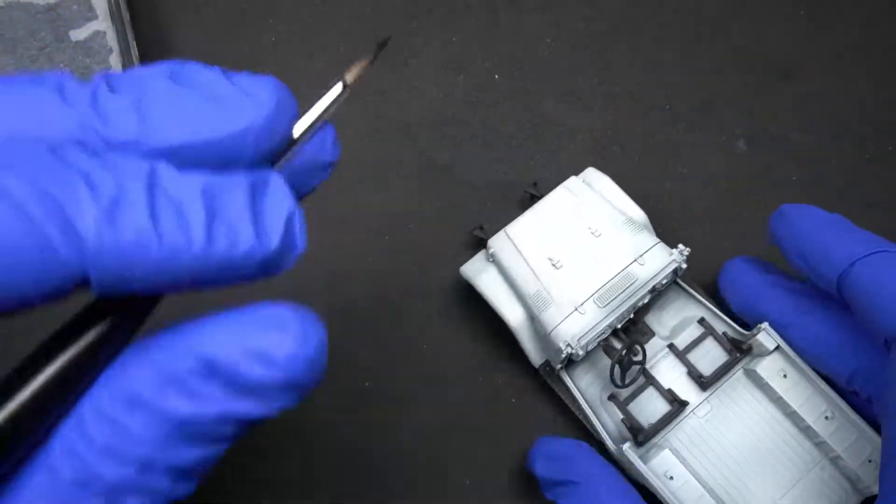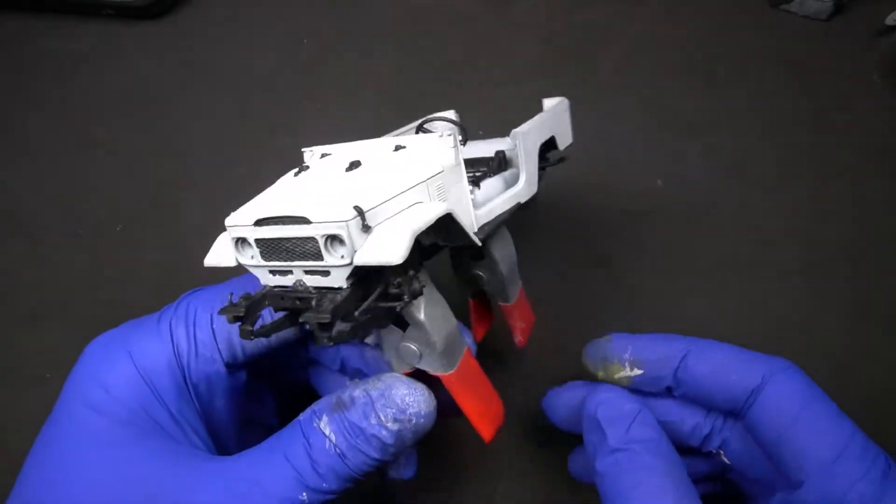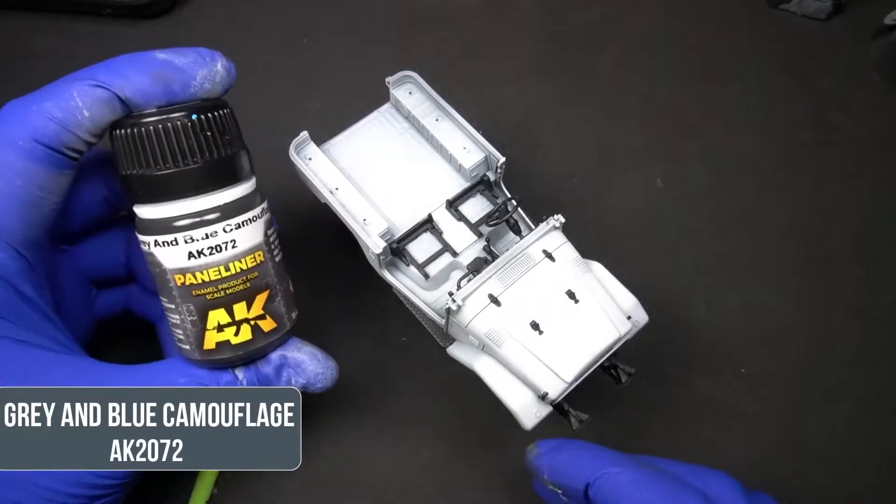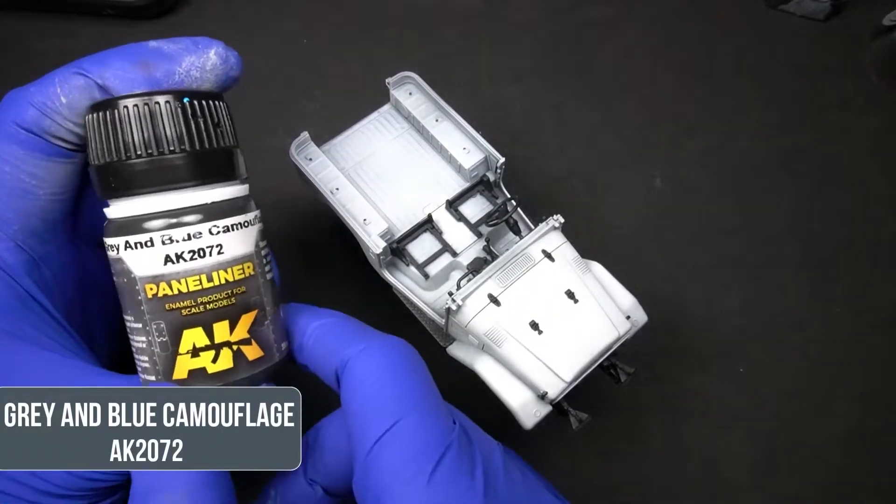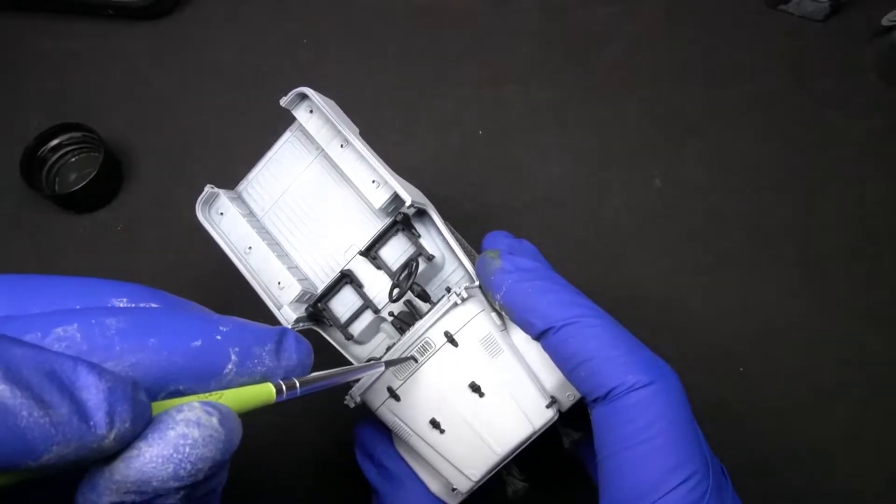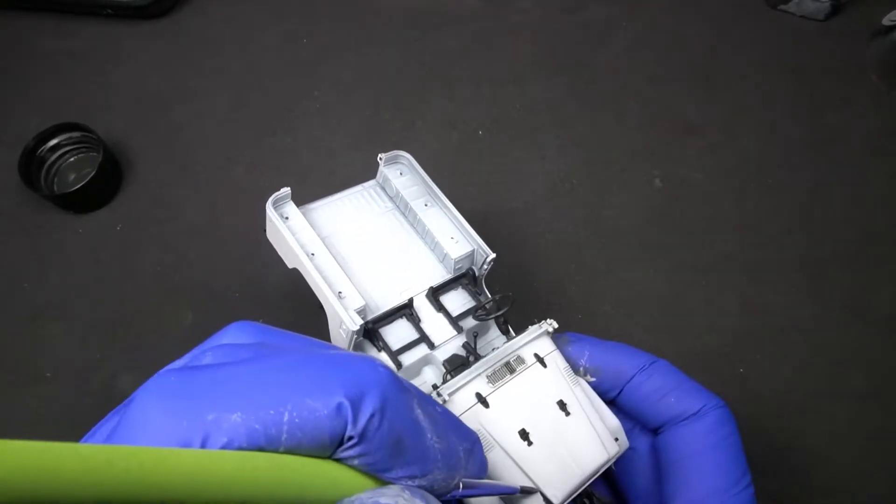The next step will be to prepare our vehicle for the following phase of painting, and we'll do that by varnishing it using the satin varnish. In our case, we're applying it with an airbrush. Once the varnish had dried, we applied the panel liner for grey and blue camouflage. Don't get confused with the name, the color is perfect to give shadow to white vehicles.